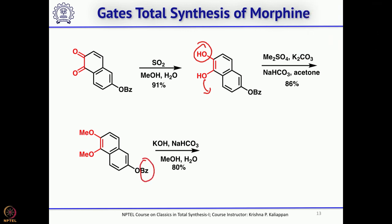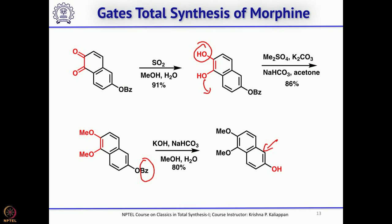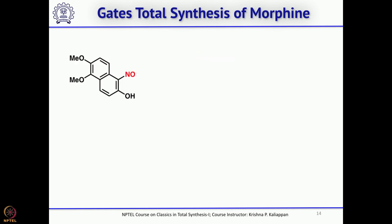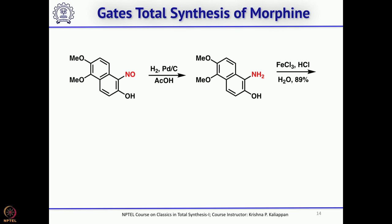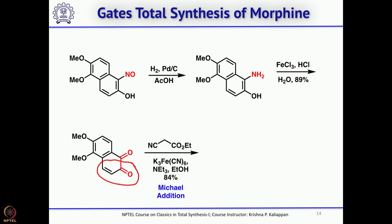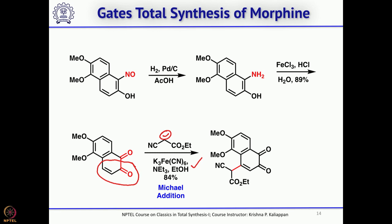The next step was removal of the benzoyl group with potassium hydroxide and methanol, then the NO group was introduced again using sodium nitrate and acetic acid, reduced to NH₂, and oxidized under the same ferric chloride conditions to give the corresponding quinone. This quinone is a Michael acceptor, so it can undergo 1,4-addition. The anion generated from a cyanoethyl ester was added in a 1,4-fashion, followed by introduction of a double bond using potassium persulfate, giving the product.